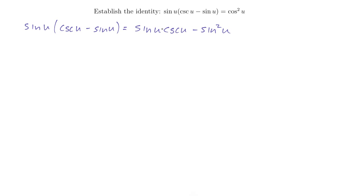Alright, now sine u times cosecant of u, to figure out what this is, let's write cosecant in terms of sines and cosines. And cosecant of u is 1 over sine u. So we get sine u times 1 over sine u minus sine squared u.